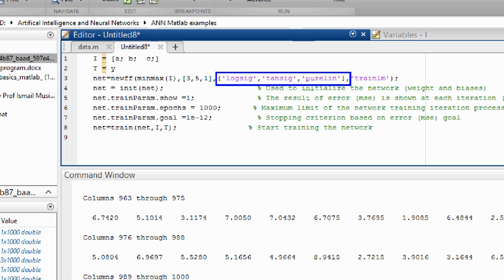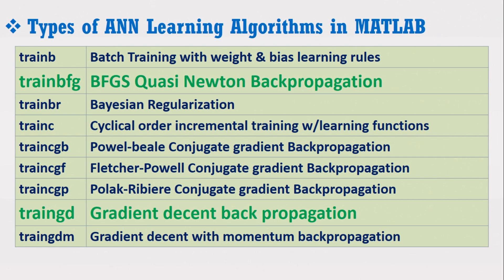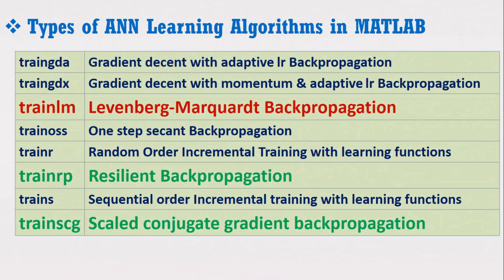If the ANN fails to train correctly, we may change the activation functions to get successful training. Note that purelin represents the pure-linear activation function, commonly used in the output layer. The last segment represents the training algorithm. MATLAB has many training algorithms already developed. The most common ones are highlighted, but among all, the Levenberg-Marquardt backpropagation algorithm is most widely used for ANN training because it provides fast results for most cases. That's why ANN uses this algorithm by default — its MATLAB code is written as trainLM.